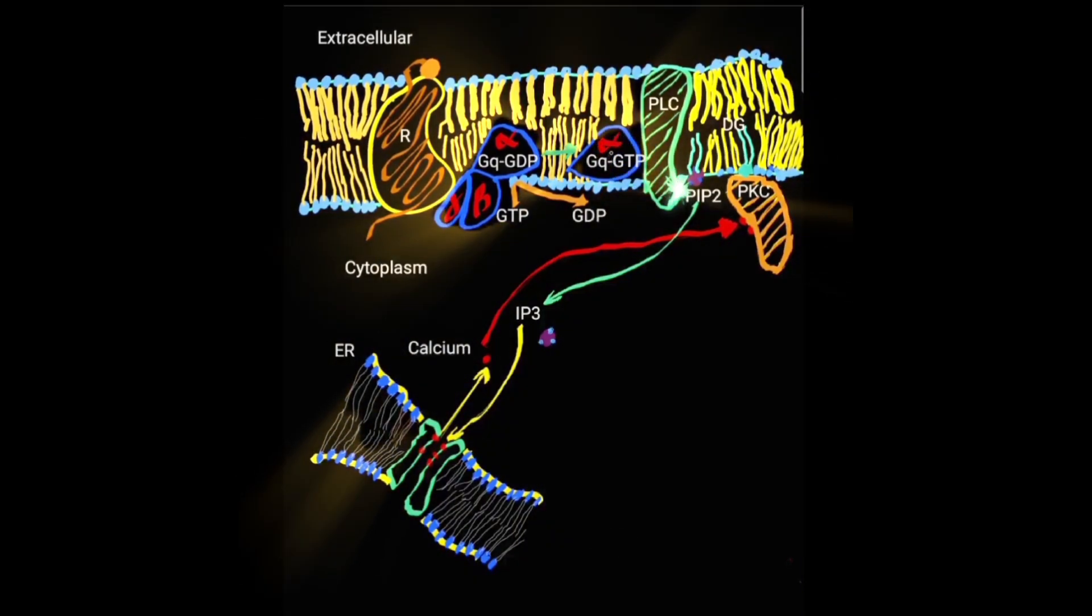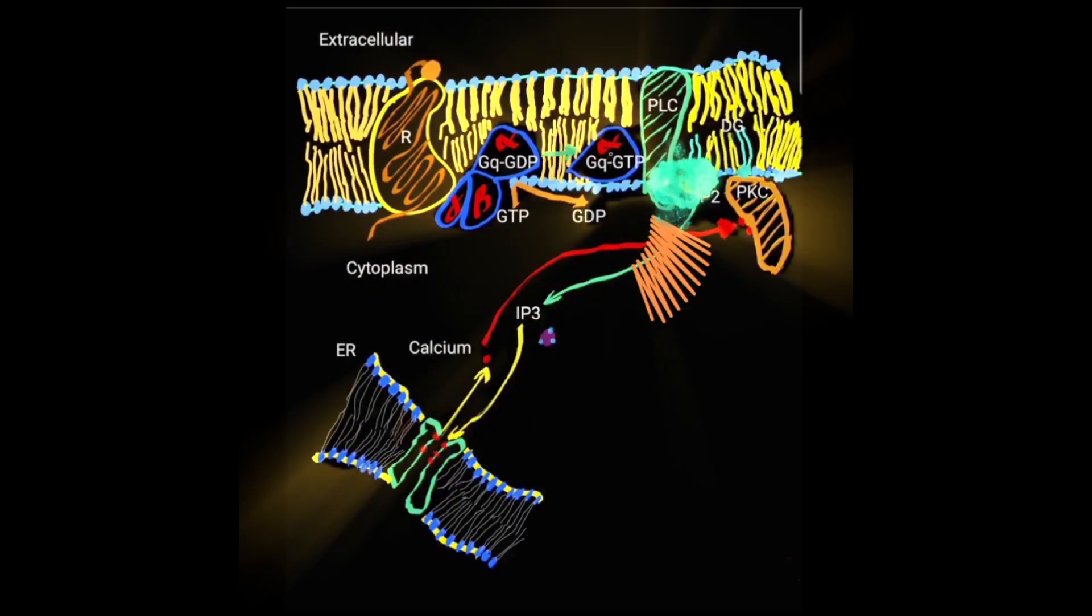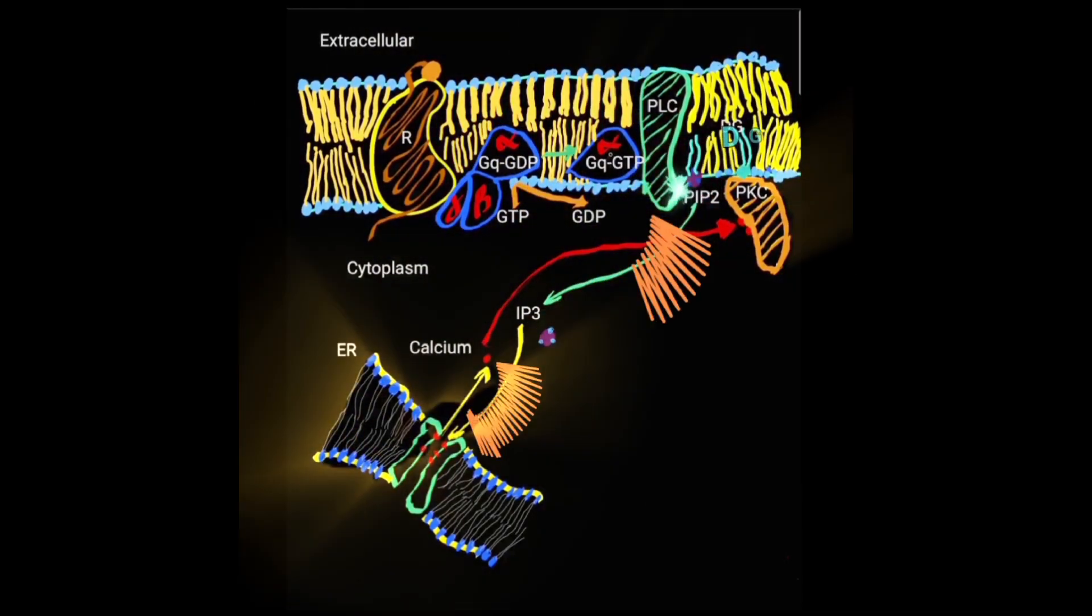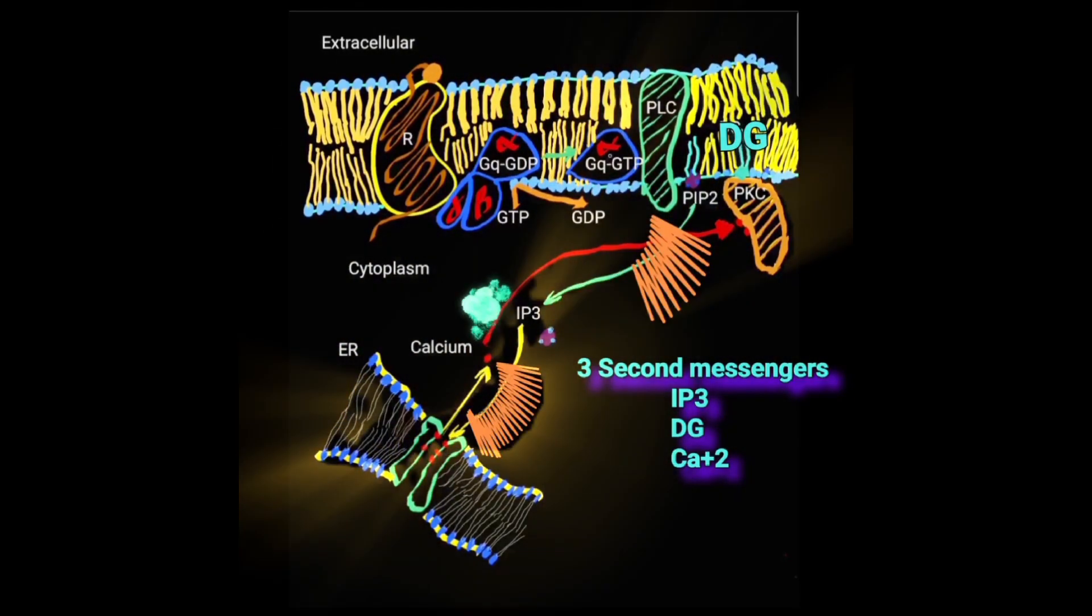Phospholipase C will hydrolyze PIP2 in the membrane to produce diacylglycerol (DG) in the membrane and IP3 in the cytoplasm.